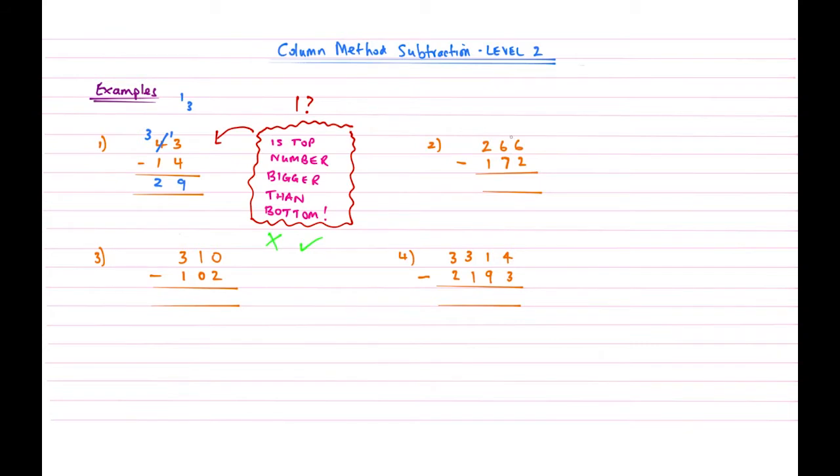Okay, so now if we move on to example number 2, so exactly the same process, we are taking each column in turn just to see if the top number is bigger or smaller than the bottom. So I'll take the units column. So in this case, 6 is bigger than 2, so we can just subtract that one like from Level 1. So 6 take away 2 is 4.